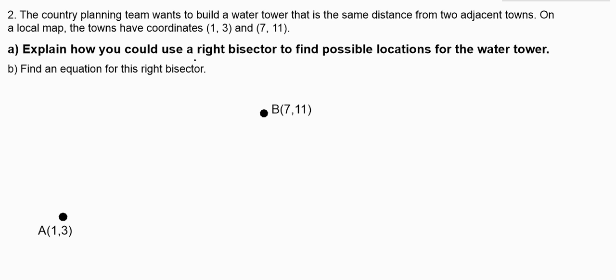But we know that we could use something called a right bisector to find locations for the water tower. So just to make sure we understand what a right bisector is, a right bisector is a line. And it's a line that has particular properties. There is a line, whether real or imagined, that connects points A and B. The right bisector is another line that intersects this line exactly at the midpoint. And it's also perpendicular to AB.